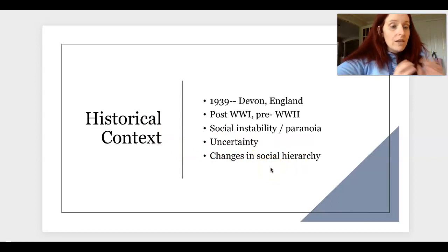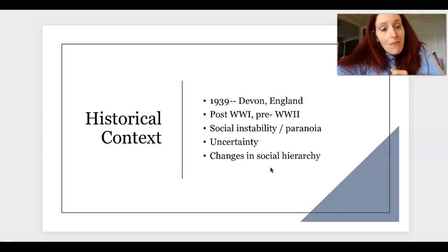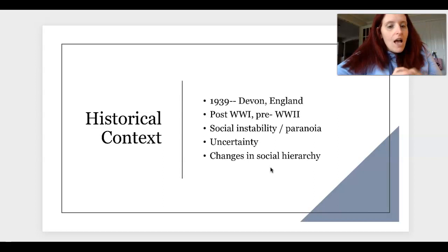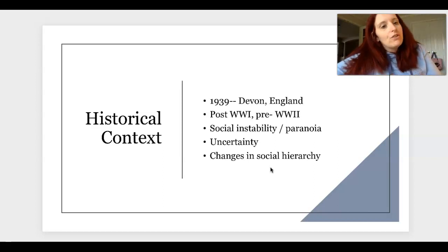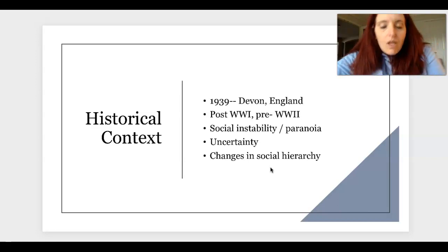The 1930s and 1940s represent a time of transition in the social hierarchy in England — a loss of the old Victorian mindset as we move into modernity. Social hierarchies and rigid structures are becoming more loose. If you look at women, one of our main characters, Vera Claythorne, is that new modern woman who is juxtaposed against the old, traditional English woman. Understanding this is important to our novel.